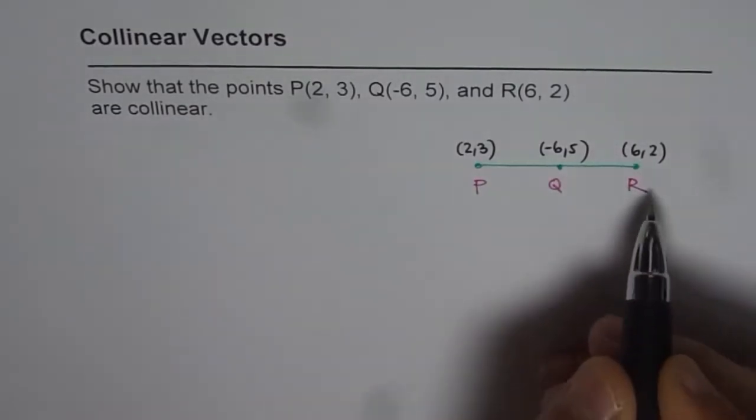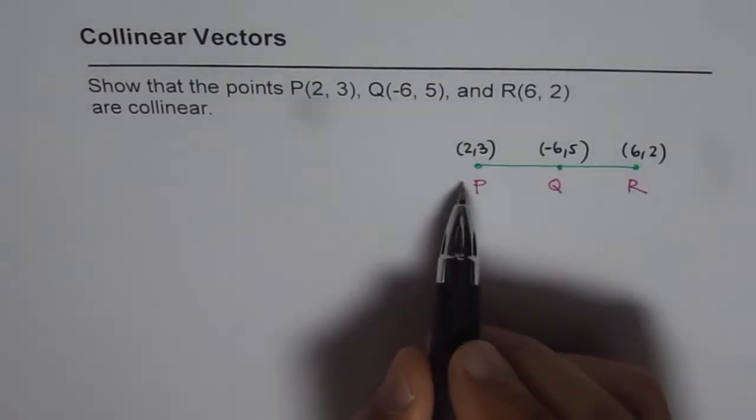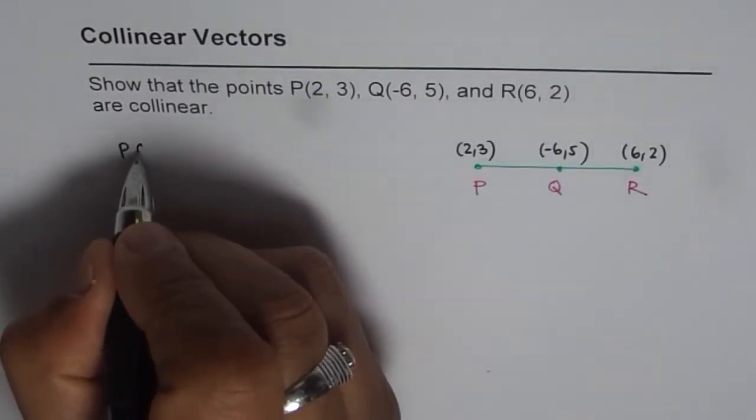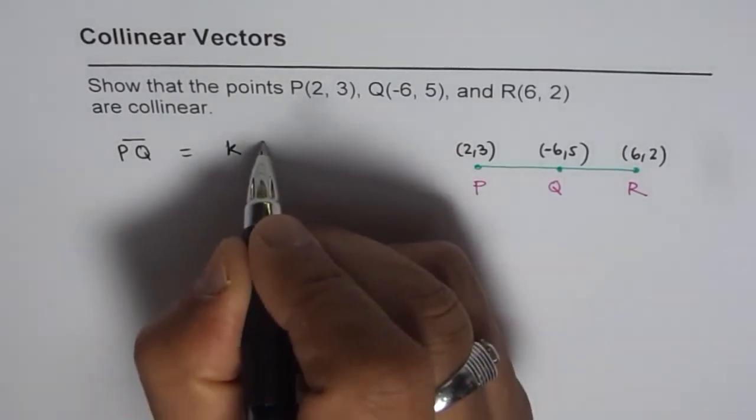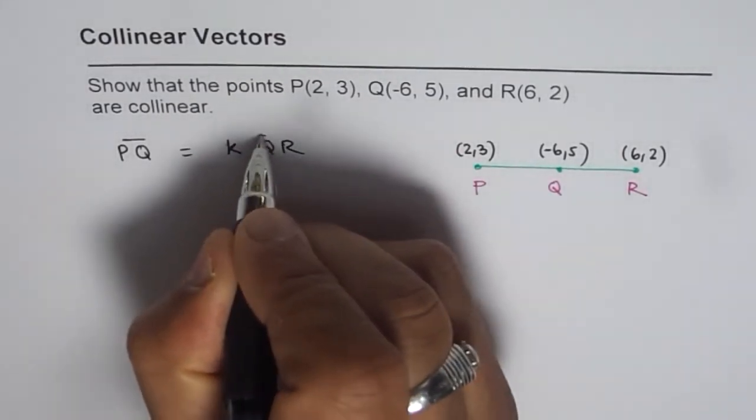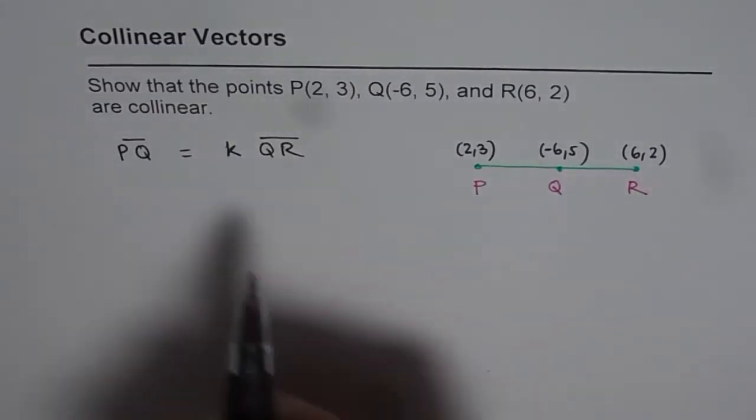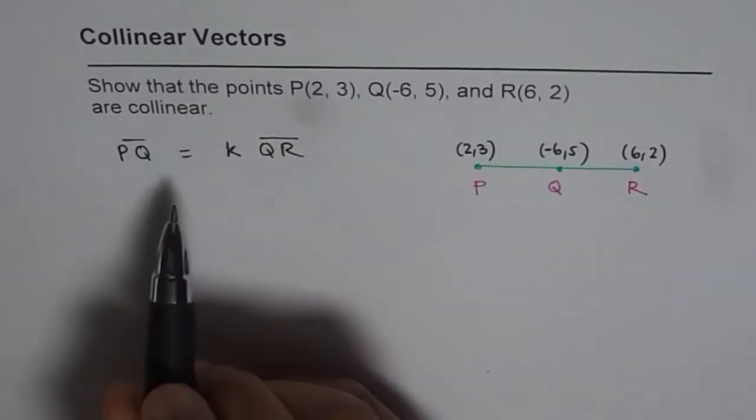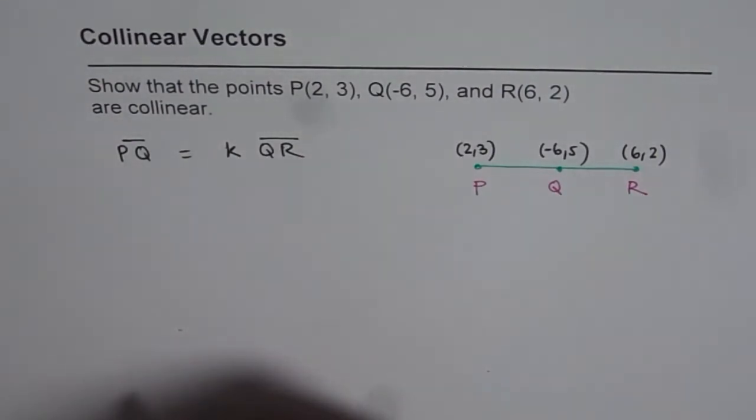So in case they are collinear, that means that PQ should be equal to scalar multiple of QR. Then they are in the same line. So let us find out the value of K. If we have a valid value of K, then they are collinear, otherwise they are not.